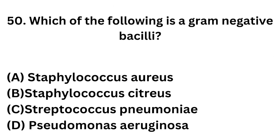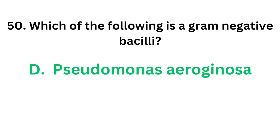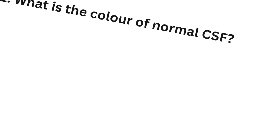Question number 50: Which of the following is a gram-negative bacillus? Option A: Staphylococcus aureus. Option B: Staphylococcus citrius. Option C: Streptococcus pneumoniae. Option D: Pseudomonas aeruginosa. The correct answer is option D, Pseudomonas aeruginosa. All others are gram-positive.